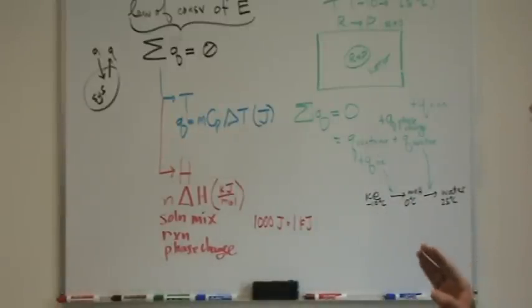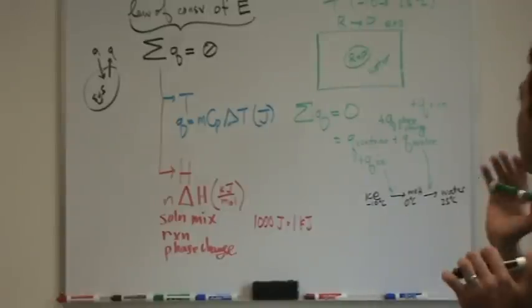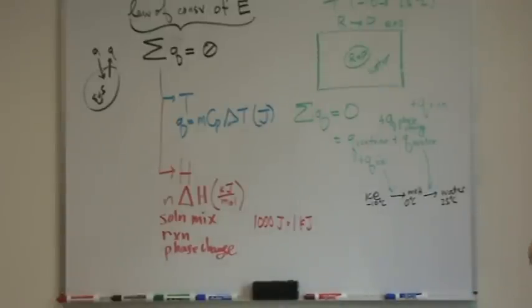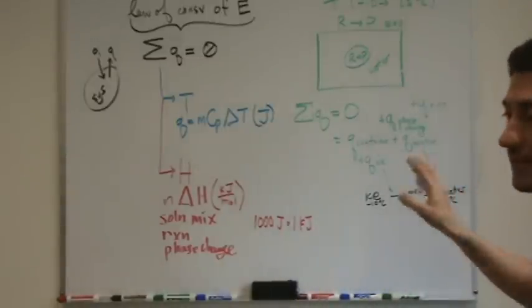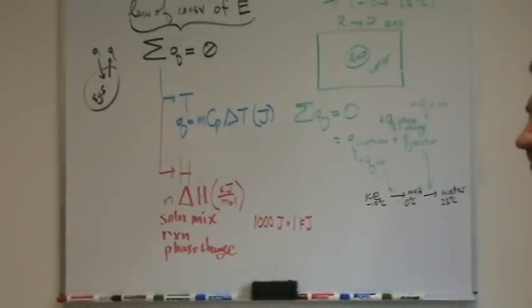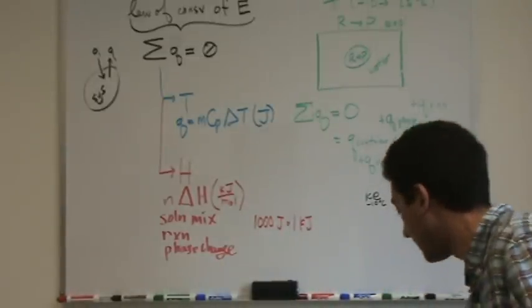So that's just the setup. If we had numbers we'd put the numbers in and solve for whatever they asked for. Does that make sense, how you do those? If you could do a problem like this you could do pretty much anything. This would be as difficult as it would possibly come.